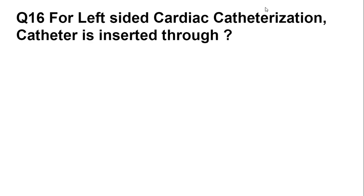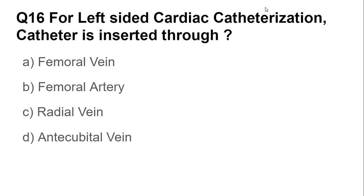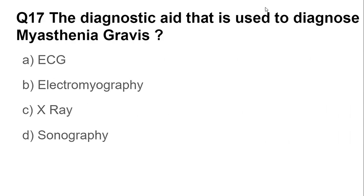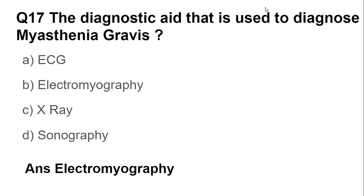Question number sixteen: for left-side cardiac catheterization, the catheter is inserted through the femoral artery. Question number seventeen: the diagnostic aid used to diagnose myasthenia gravis is electromyography — a diagnostic procedure that assesses the health of muscles and the nerve cells that control them.